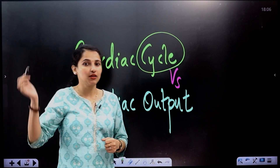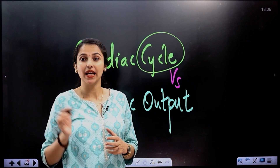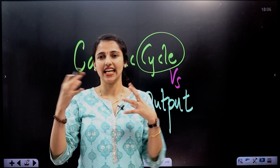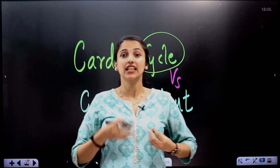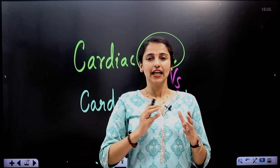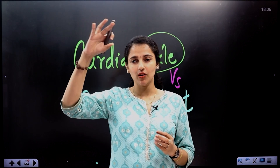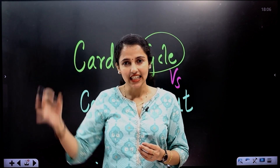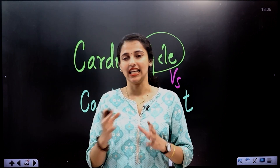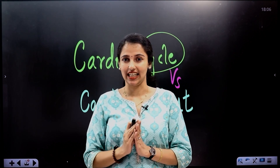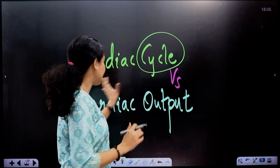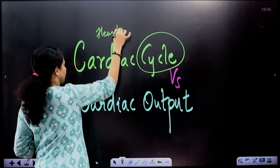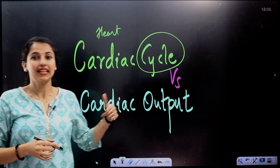A cycle is a continuous event that repeats — just like the Nitrogen Cycle or Carbon Cycle. That is the Cardiac Cycle. In your mind, it is heart-related. Cardiac means heart.